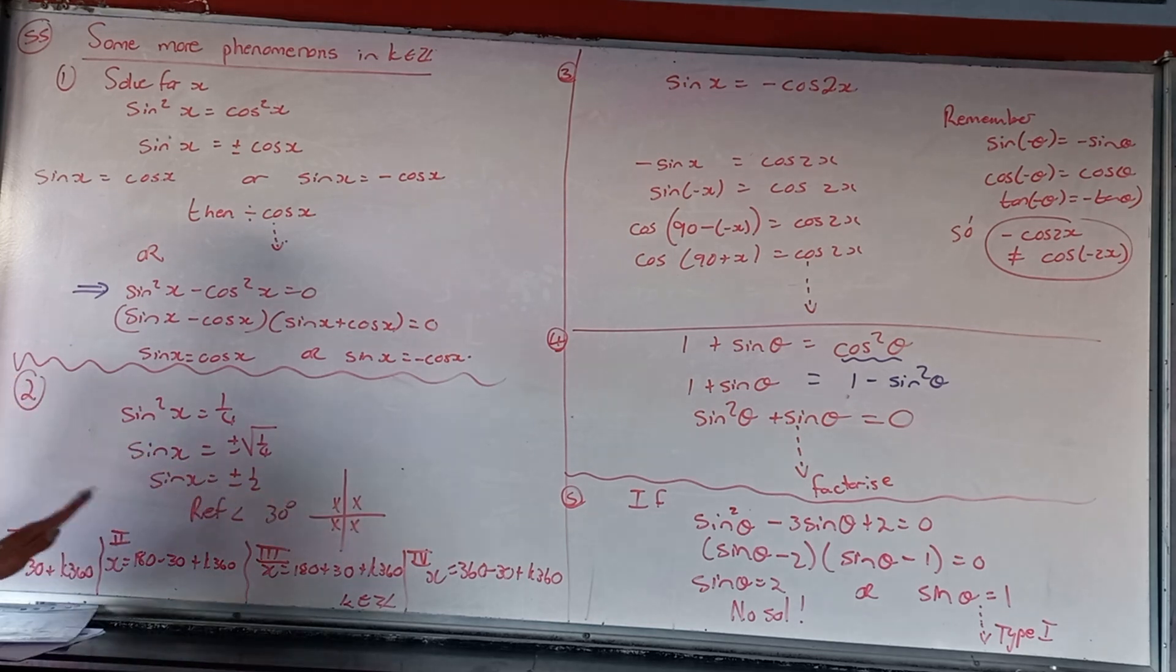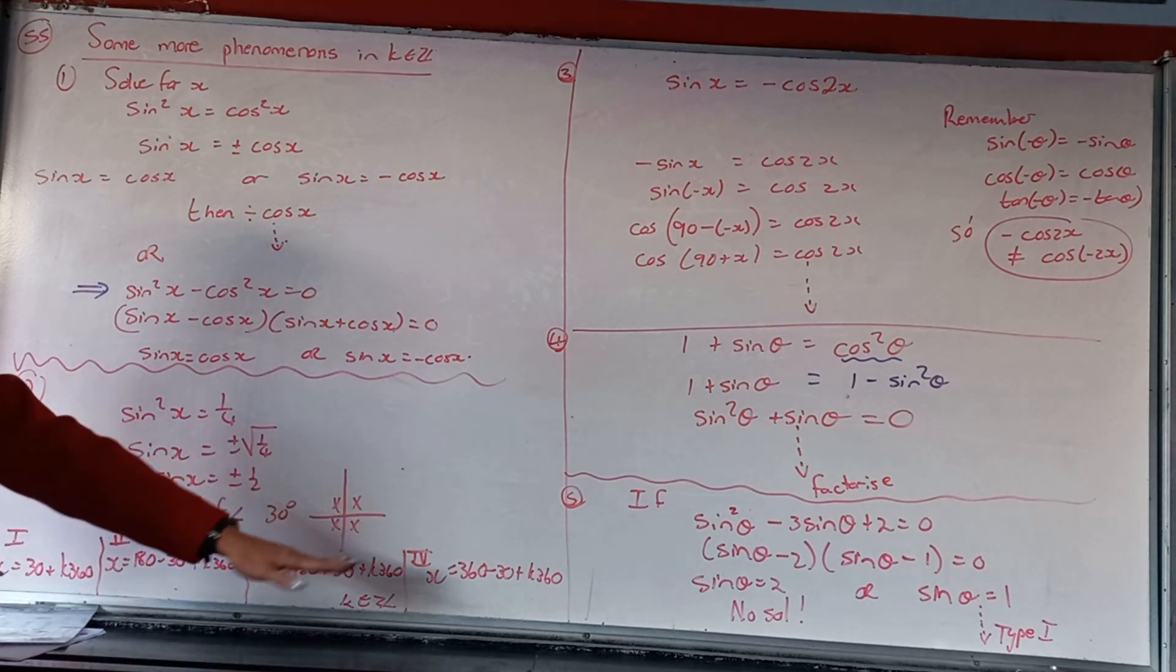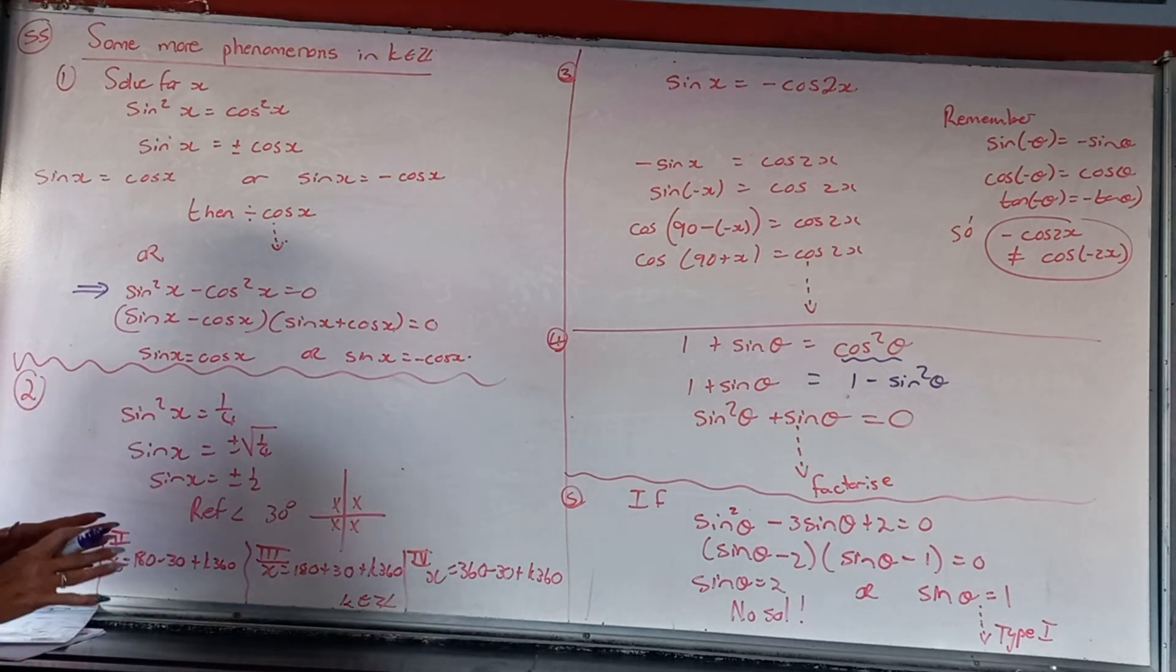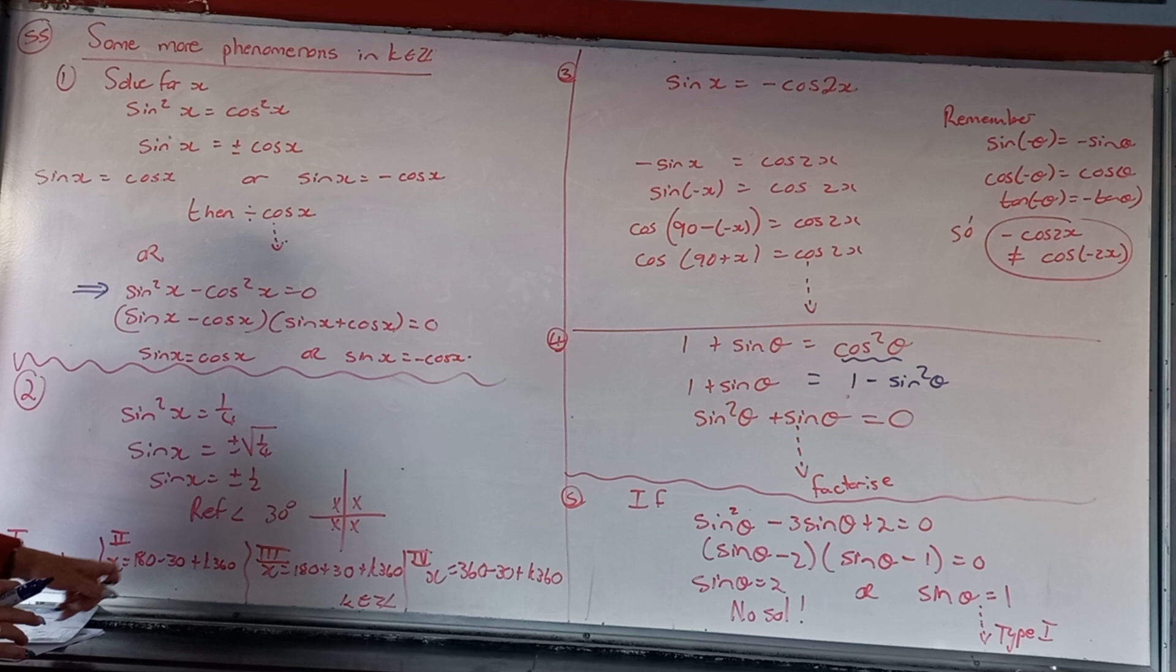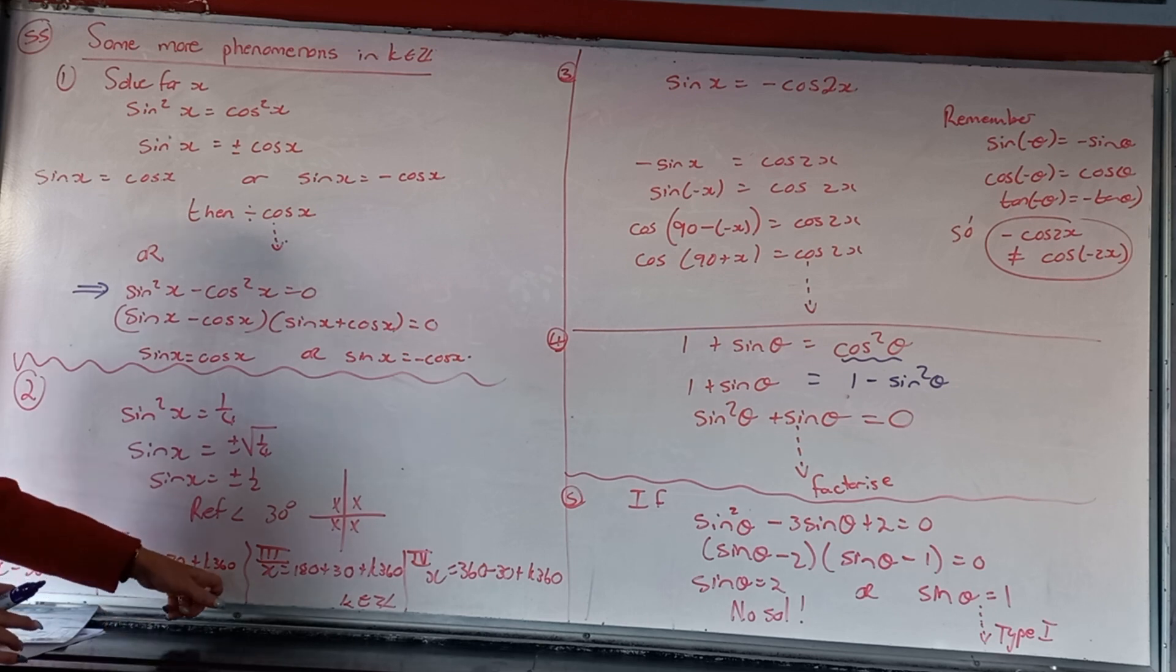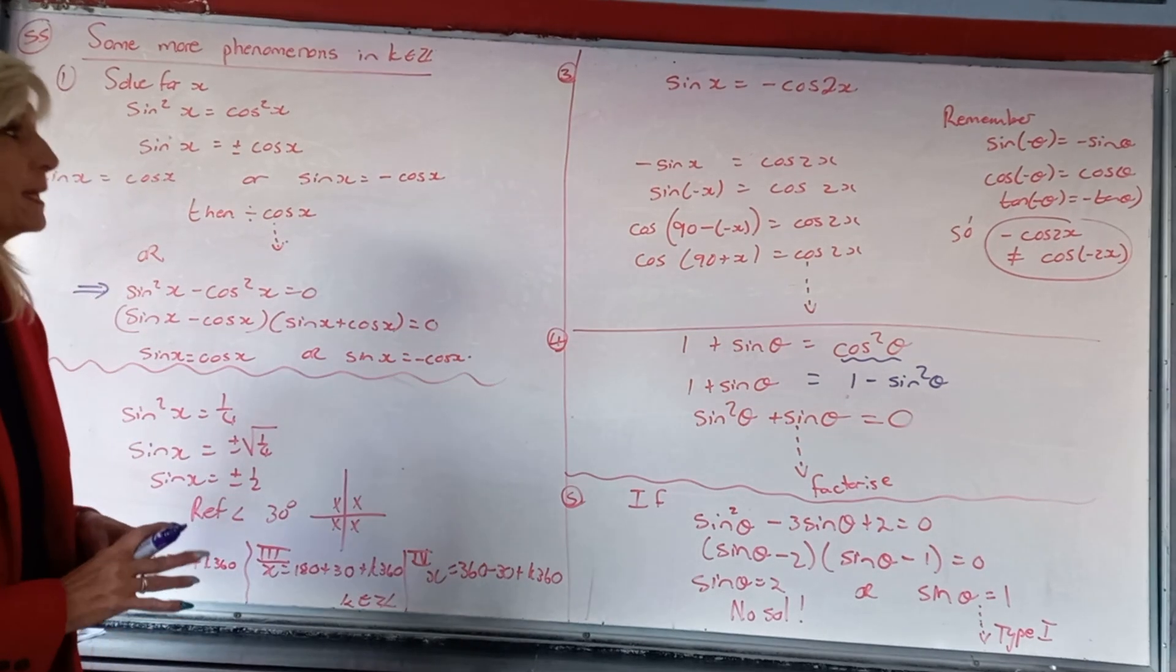That means you just go and you write quadrants 1, quadrants 2, 3 and 4. There's lots of variations in this, but don't get cute with yourself. So I've just write quadrants 1, reference angle is 30 plus k 360, 180 minus 30 plus k 360, 180 plus 30, 360 minus 30.